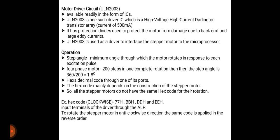For example, the hexadecimal codes for a stepper motor rotating in the clockwise direction are 77H, BBH, DDH, and EEH. This code is applied to the input terminals of the driver through the assembly language program. To rotate the stepper motor in the anticlockwise direction, the same code is applied in the reverse order.